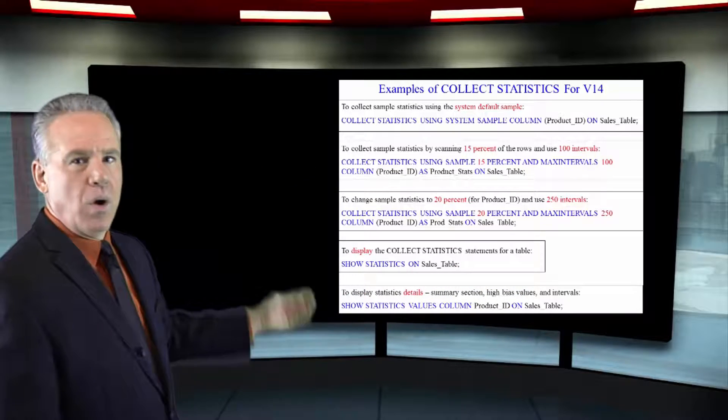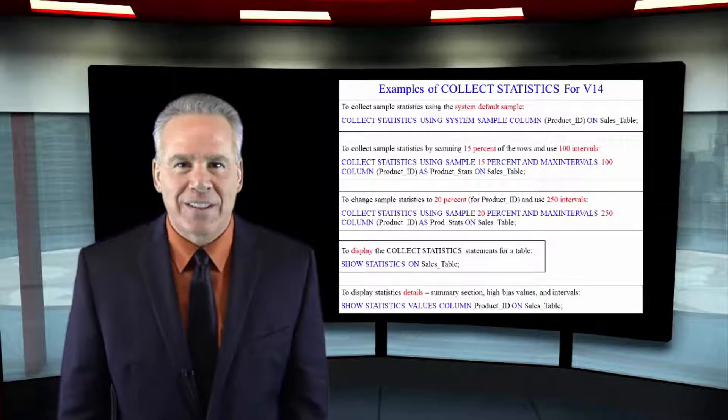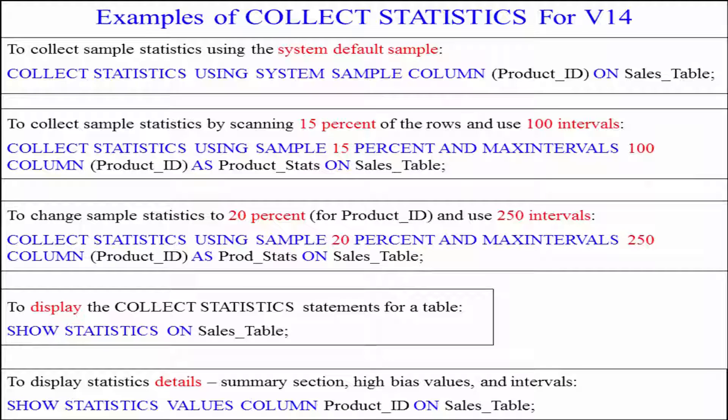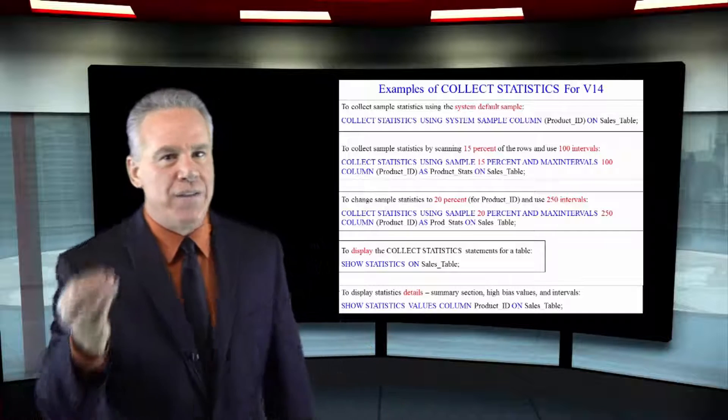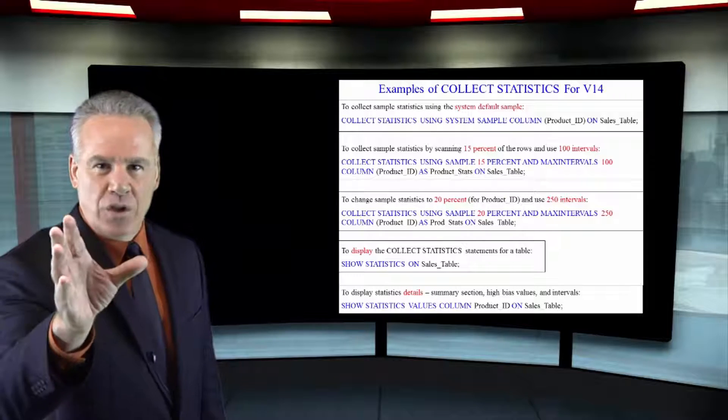Collect statistics using sample. I want a 15% sample, not the system default, and I want max intervals of 100. We normally chop every one of these statistics into 250 intervals. I only need 100 intervals and a 15% sample. You've stated it.